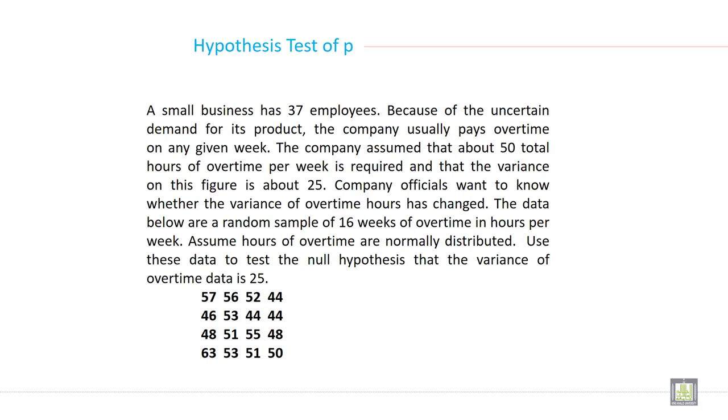A small business has 37 employees. Because of the uncertain demand for its product, the company usually pays overtime on any given week. The company assumes that about 50 total hours of overtime per week is required and that the variance on this figure is about 25.